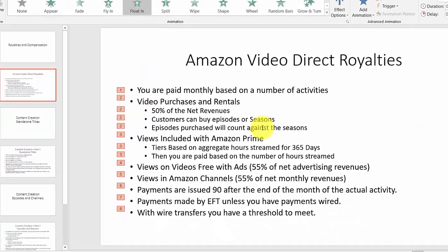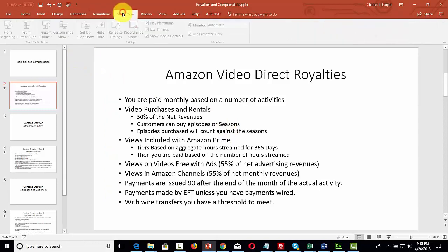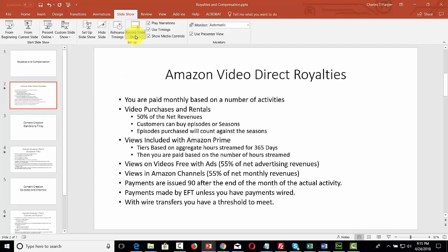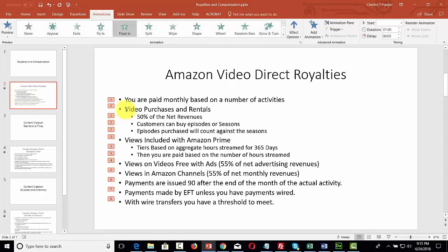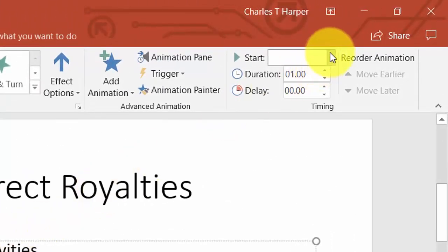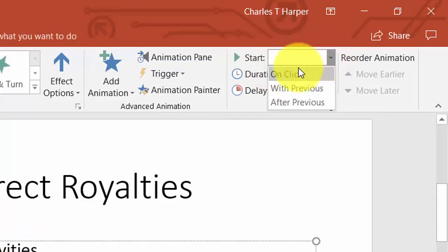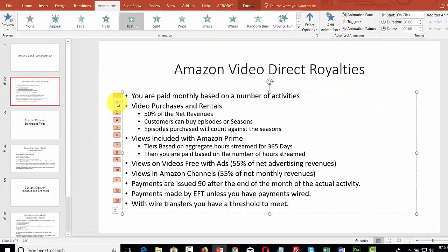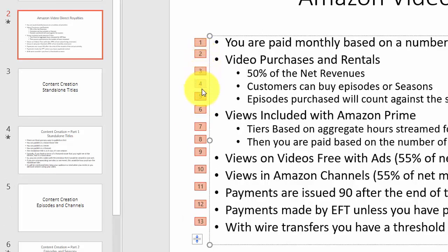To change this so each sub-point comes one after the other, go back to animations and place your cursor at the first sub-point. Go to the Start tab and select 'On Click.' You'll notice that the numbers change from 2, 2, 2, 2 to 2, 3, 4, 5, 6 — meaning each point will come one at a time. If we go back to the slideshow from the current slide and tab through, our points now come one at a time.